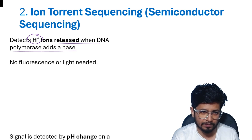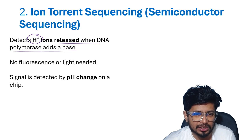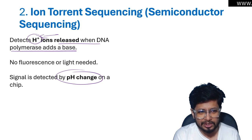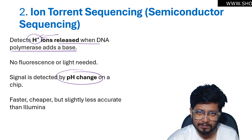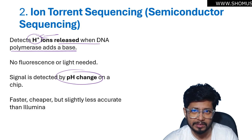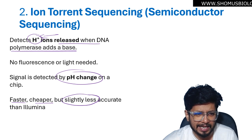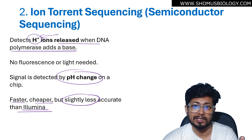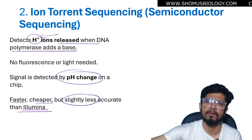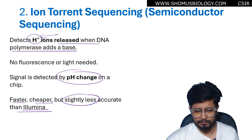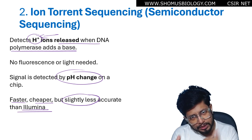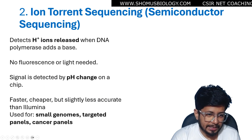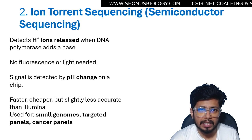No fluorescent tag is involved and no light is involved. The signal is detected by a pH change, because proton concentration is directly related to pH. By measuring the pH change in the chip, we can confirm that sequencing is occurring. It is faster and cheaper than Illumina but slightly less accurate. It is cheaper because the semiconductor-based chip can be produced using an existing workflow.